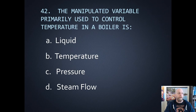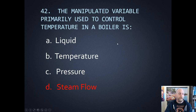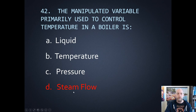Number forty-two: the manipulated variable primarily used to control temperature in a boiler. We are manipulating steam flow to ultimately control temperature. That's what the manipulated variable usually screws people up on — it's a bit confusing. What is the manipulated variable? Ultimately, you are manipulating something in order to control something. We're manipulating steam flow to ultimately control the temperature out of the boiler.